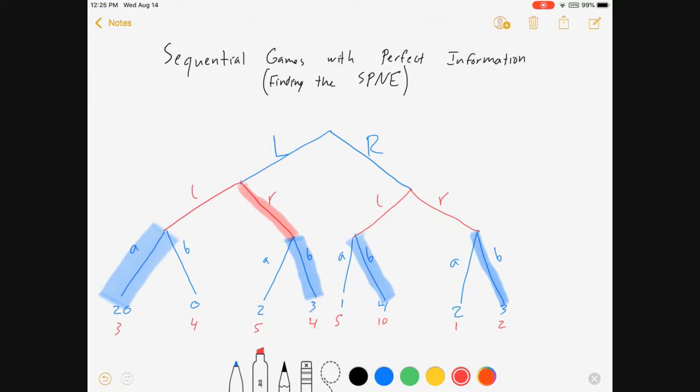And now we've got a sub-game perfect Nash equilibrium for this larger game. Likewise, we can figure out this one over here, because this 10 is greater than this 2. I can ignore these outcomes. One, because they're dominated, but also just because we're never going to get to them because blue won't let it happen.